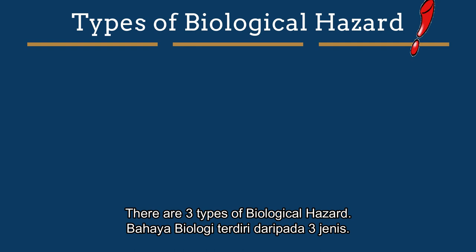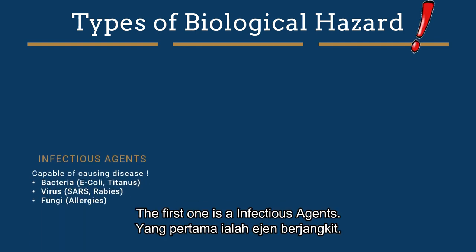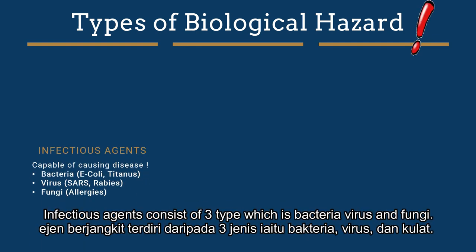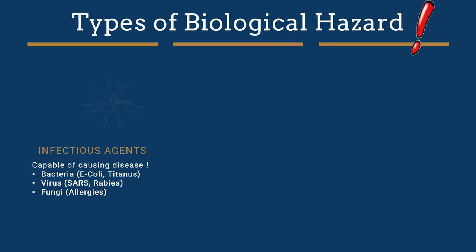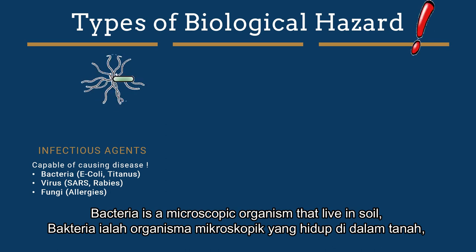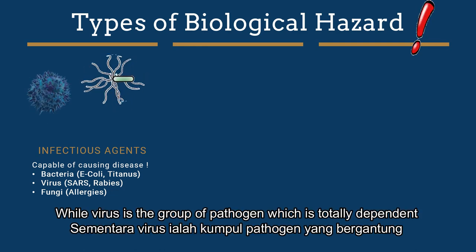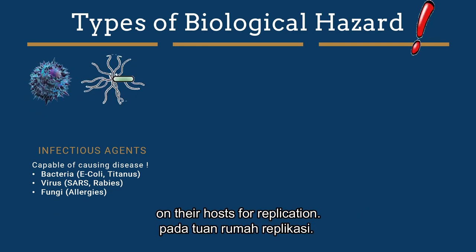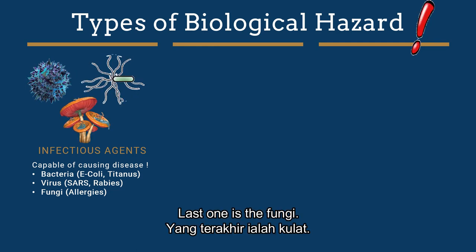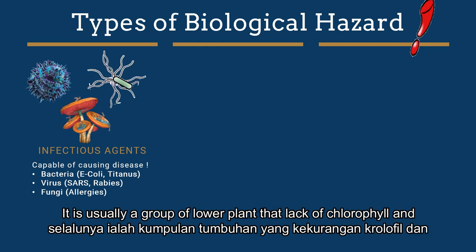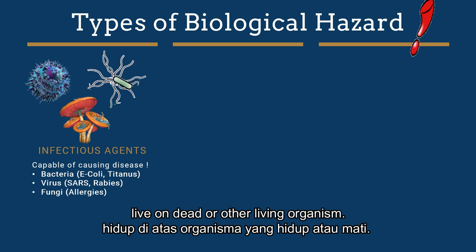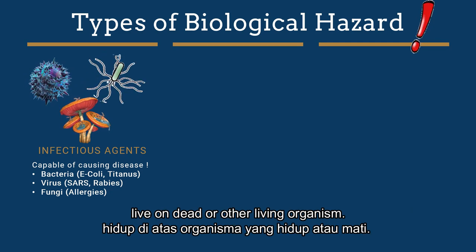There are three types of biological hazard. The first one is infectious agents, which consists of three types: bacteria, virus and fungi. Bacteria is a microscopic organism that lives in soil, water, organic matter, and other bodies of plants and animals. Virus is a group of pathogens which are totally dependent on their host for replication. Fungi is usually a group of lower plants that lack chlorophyll and live on dead or other living organisms.